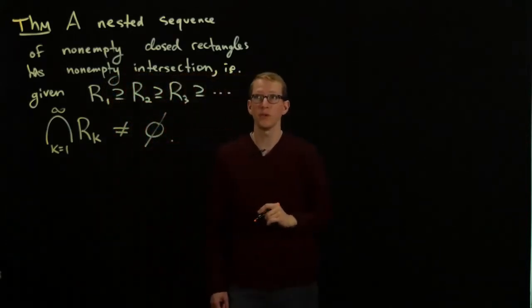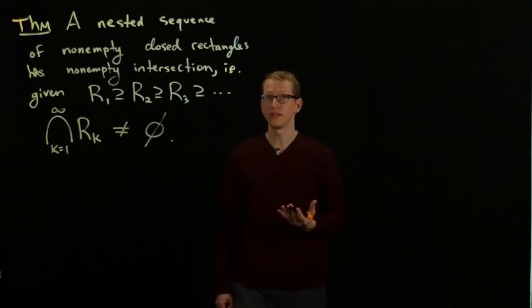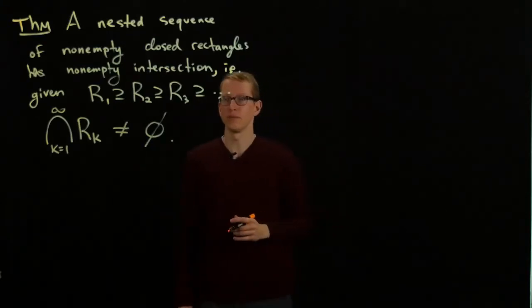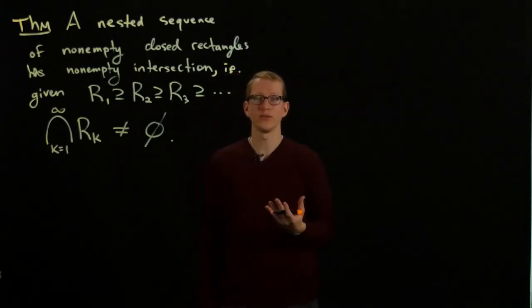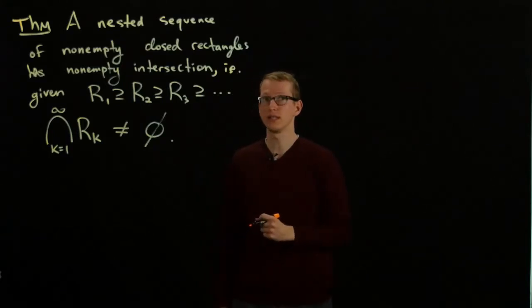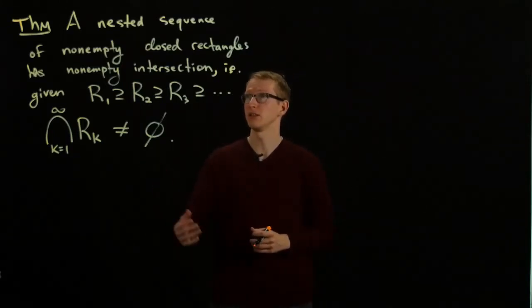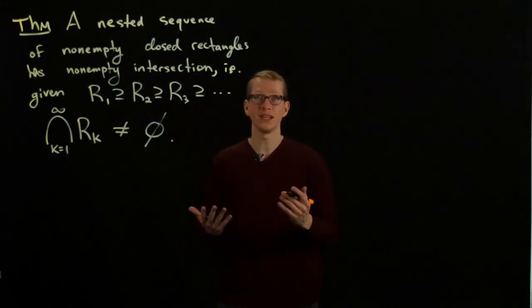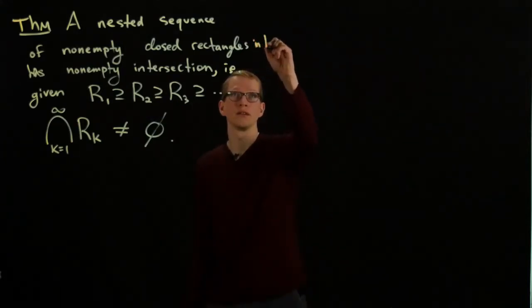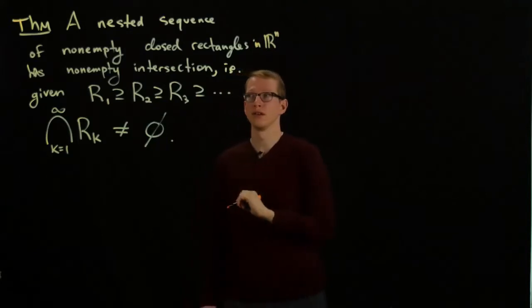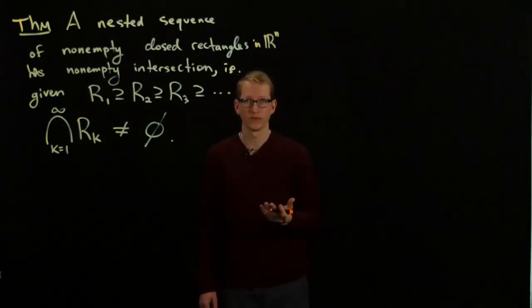This is the statement of the theorem. We already know that this is true in Euclidean space when we deal with one dimension. This statement is true for any finite dimension. Technically, this should say a nested sequence of non-empty closed rectangles in Rn has non-empty intersection for all n.